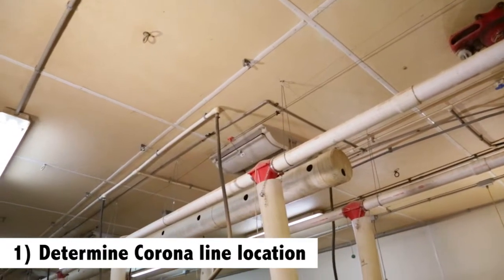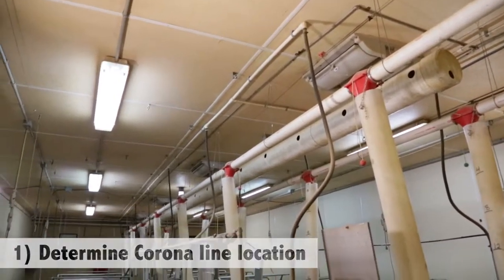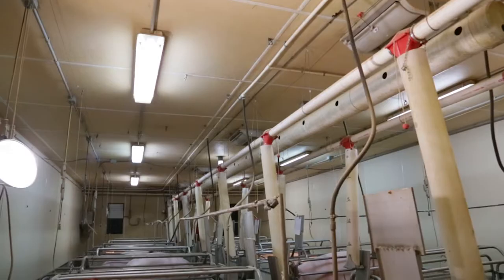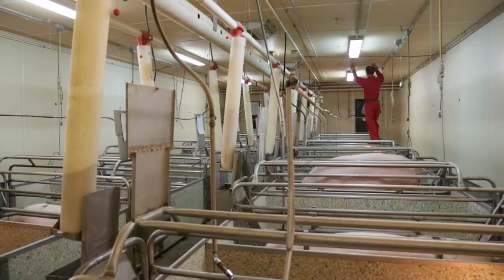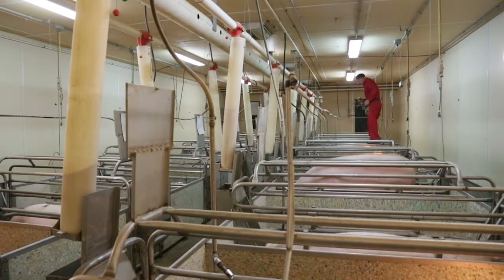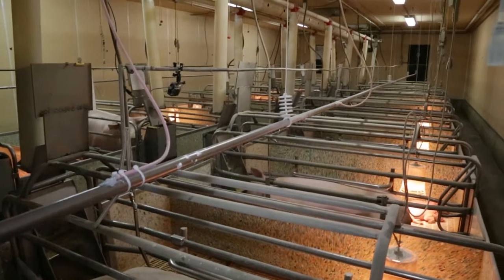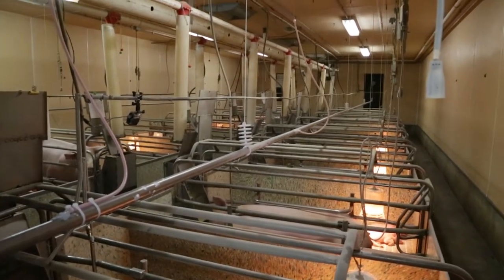First, determine where to install the corona pipe lines. A corona line ideally energizes a 10 foot wide lane which is typically centered over 10 feet of pen space. Determine the best location to install corona pipe drop line supports. Evenly center the corona pipe over the pig space. During operation, the corona pipe must be at least 6 inches away from any objects.